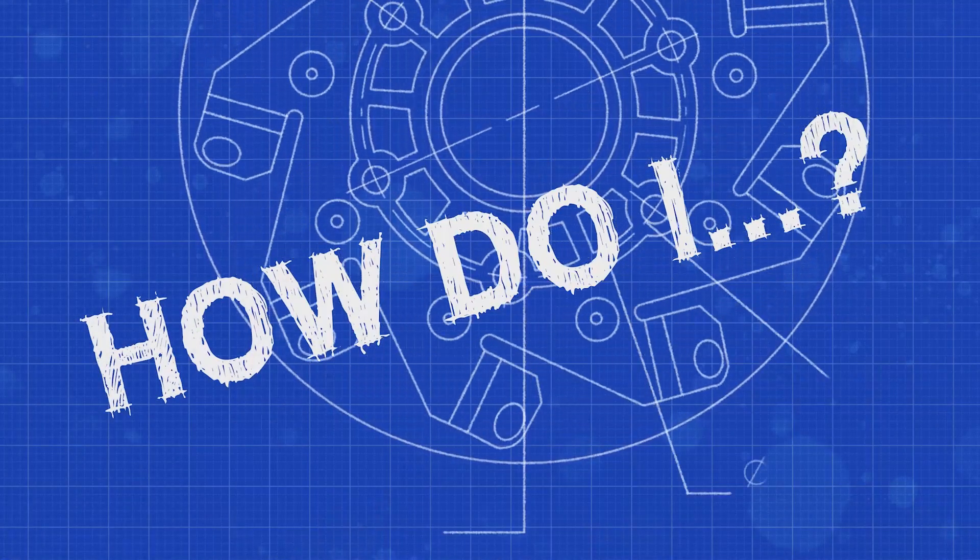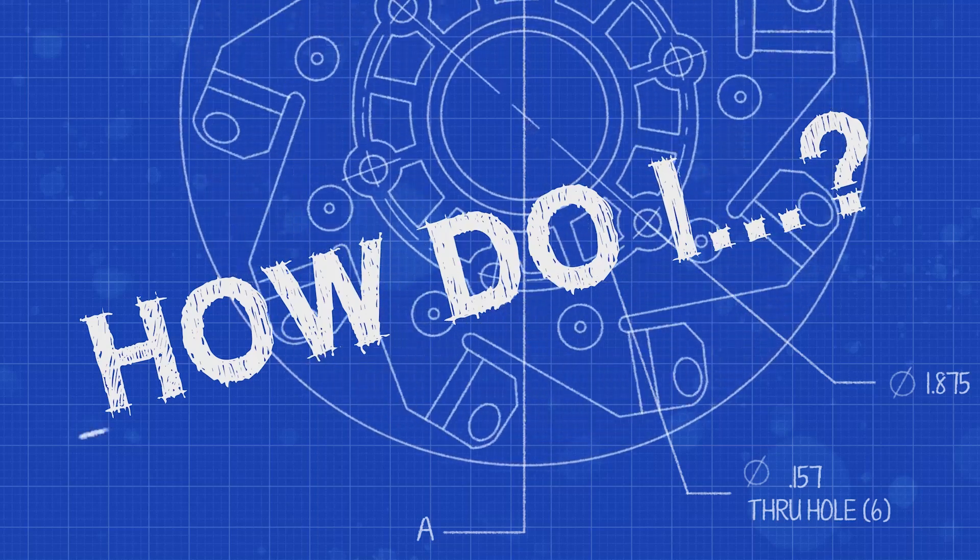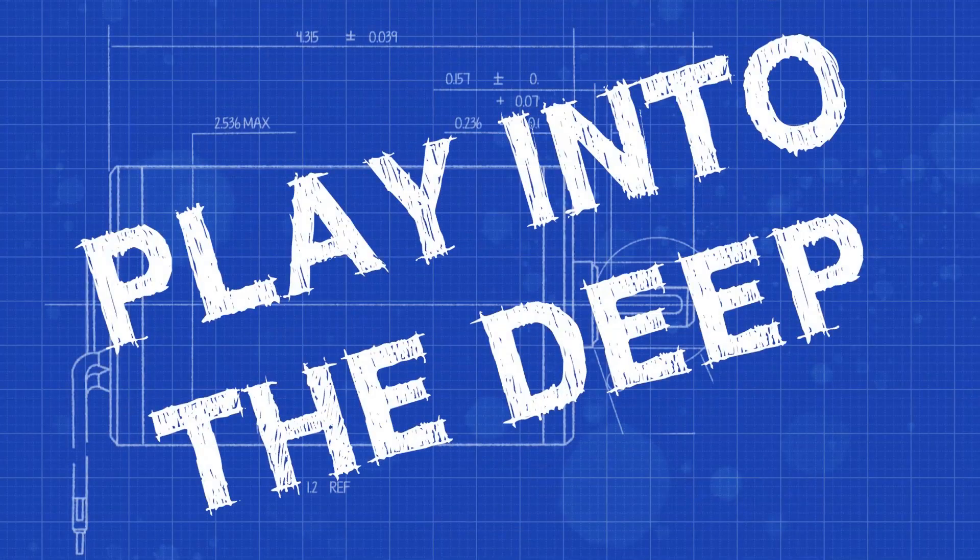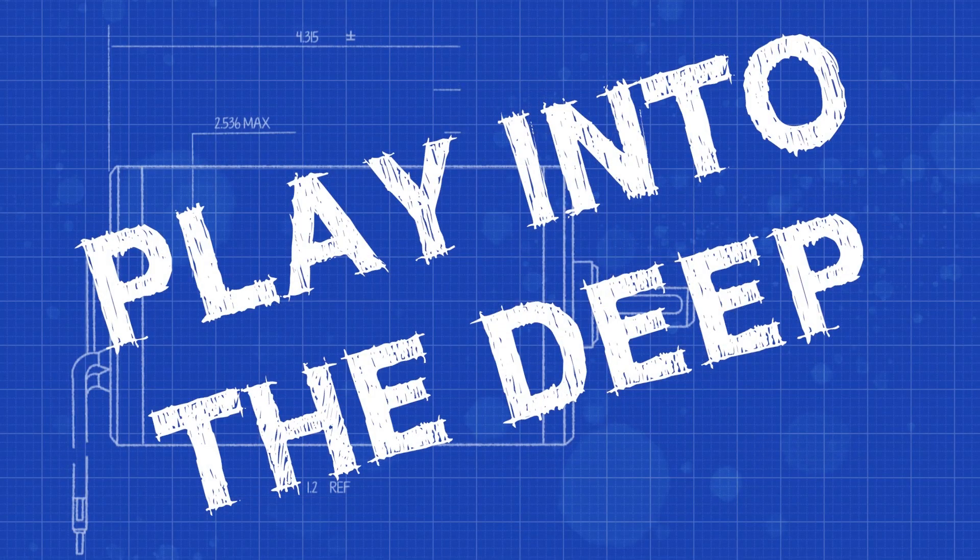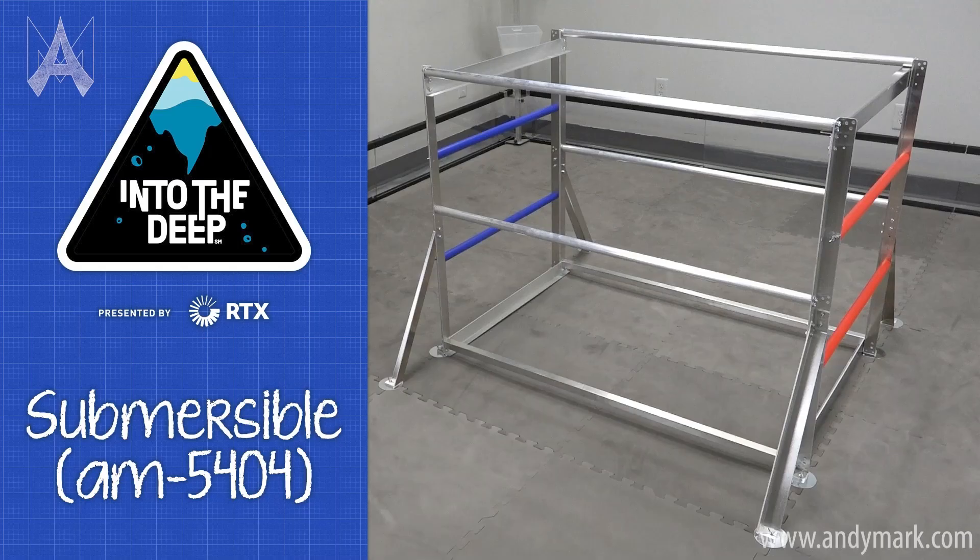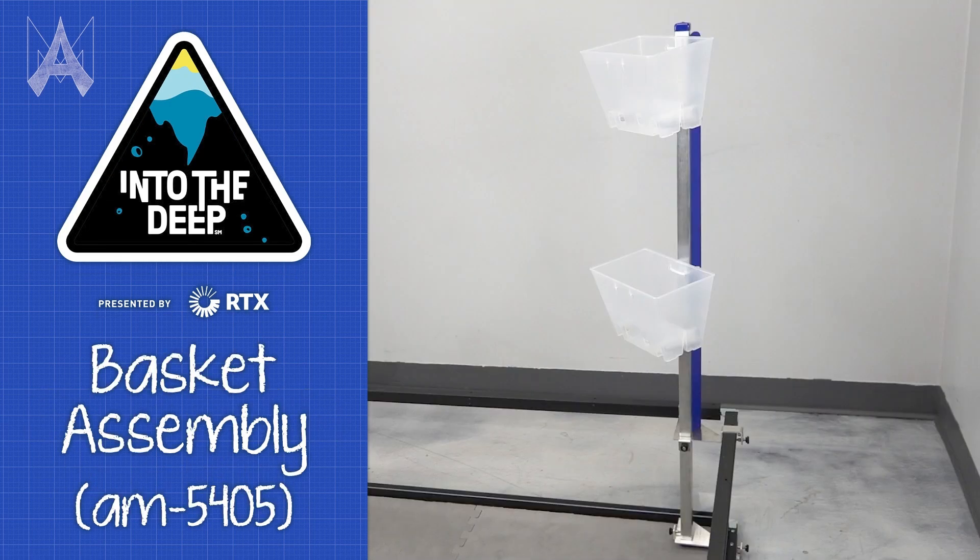How do I play Into the Deep? In Into the Deep, there are three structures on the field: the submersible and the two basket structures.